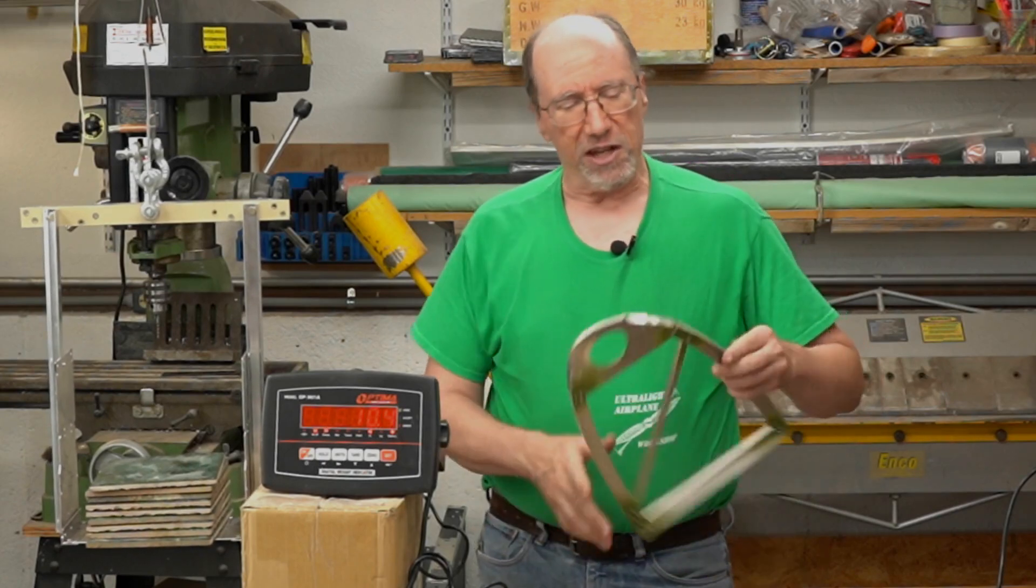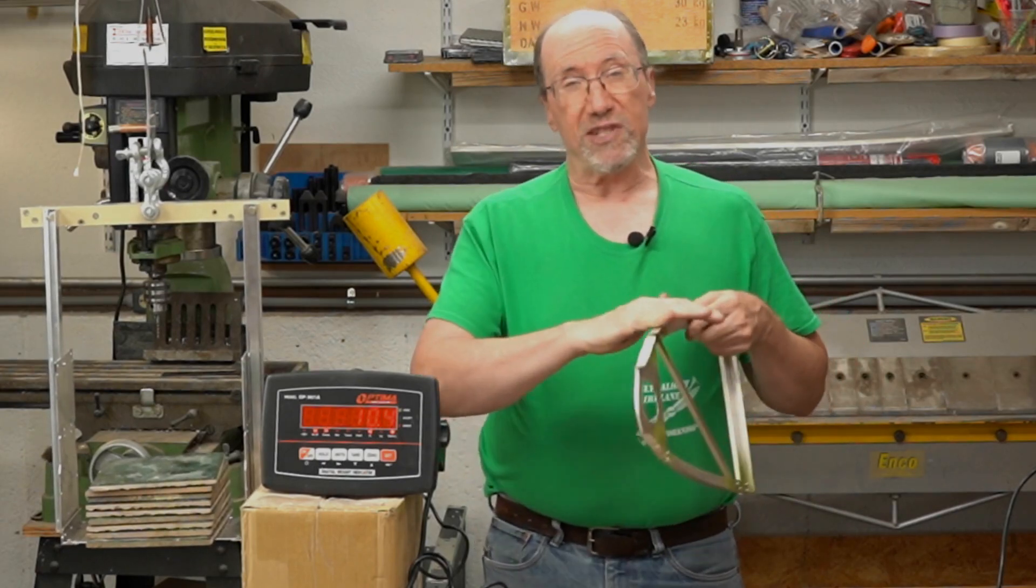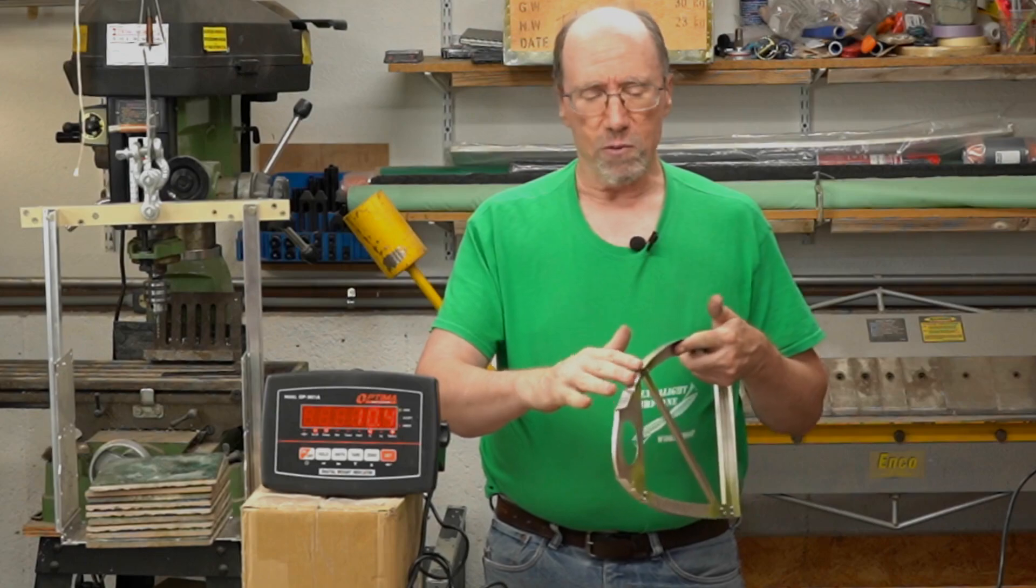Welcome to a structural analysis video from the Ultralight Airplane Workshop. In this video we're going to consider the thickness of the ribs that we want to use specifically for the UWS-4, but it would be applicable to other airplanes that are mostly aluminum construction.